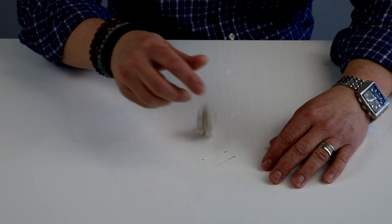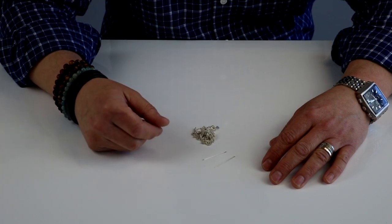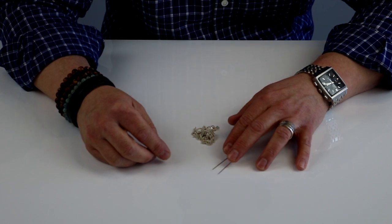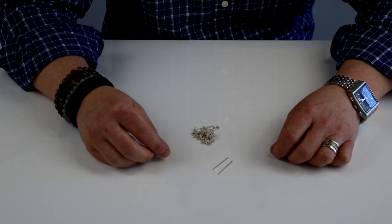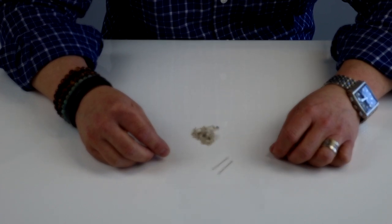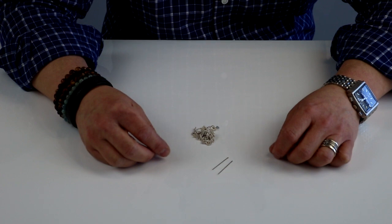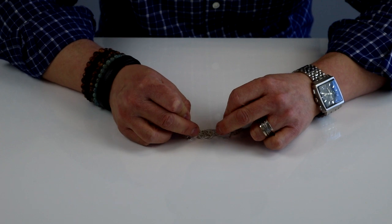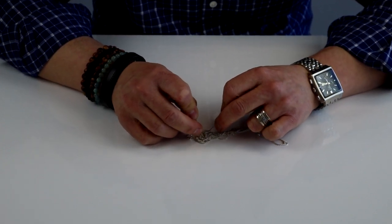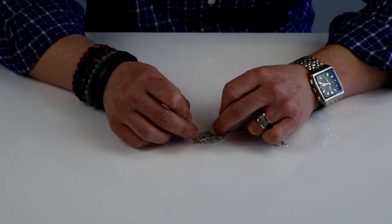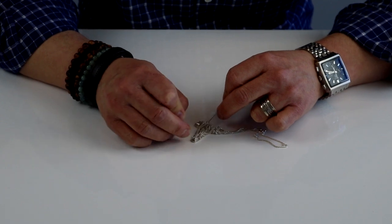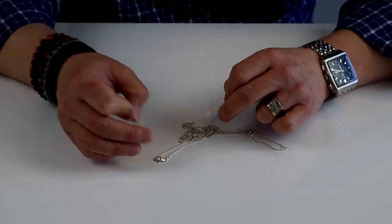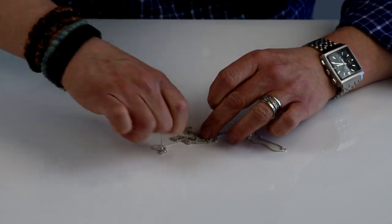So we've got our messed up wad of chains and we've got our two pins right there. Now the best thing to do is start by finding the most tangled portions of the chain. It seems to be pretty bad right here. So we're going to use the pins to just tease out the knots and separate these pieces.